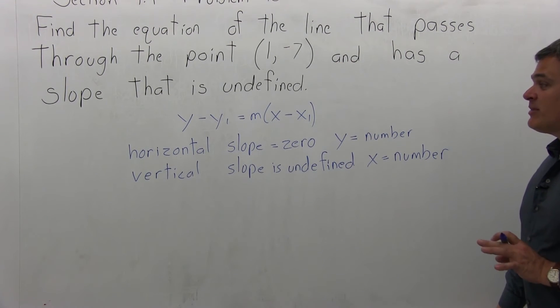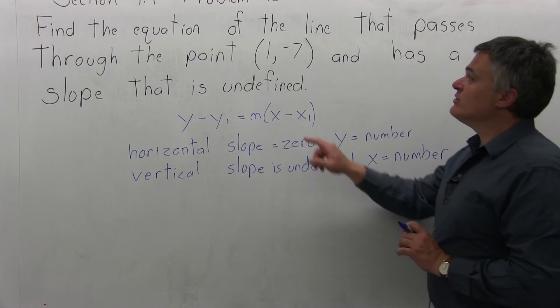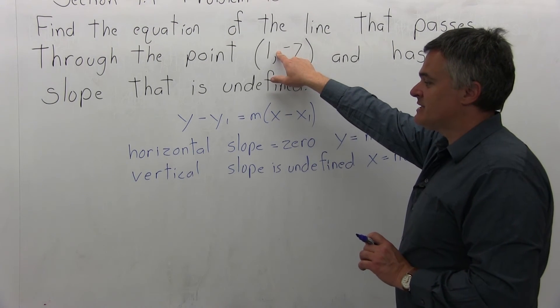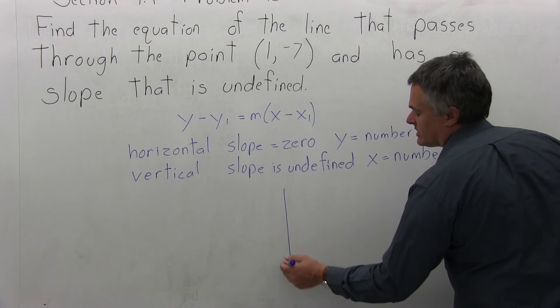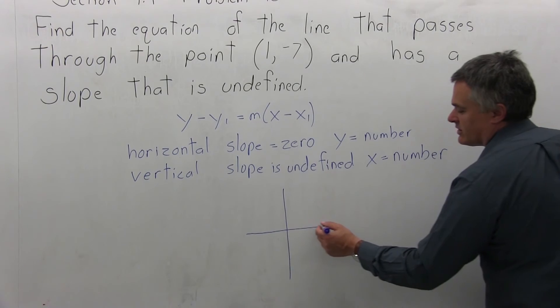So we have some type of vertical line, and it goes through the point (1, -7). So to look at it on a graph, and the question does not ask you to graph it. You certainly don't have to.